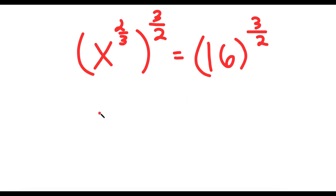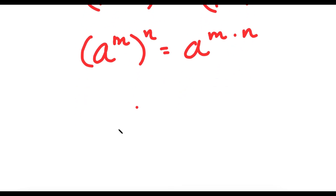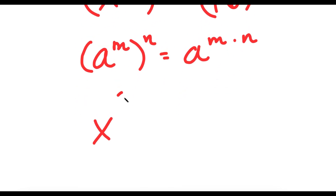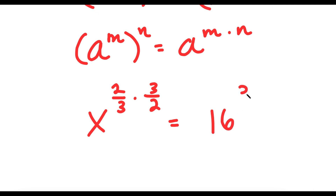Now if I have something in the form a to the power of m to the power of n, this is equal to a to the power of m times n. So notice over here, I have x to the power of 2 over 3 to the power of 3 over 2. So this is the same thing as x to the power of 2 over 3 times 3 over 2, which is equal to 16 to the power of 3 over 2.